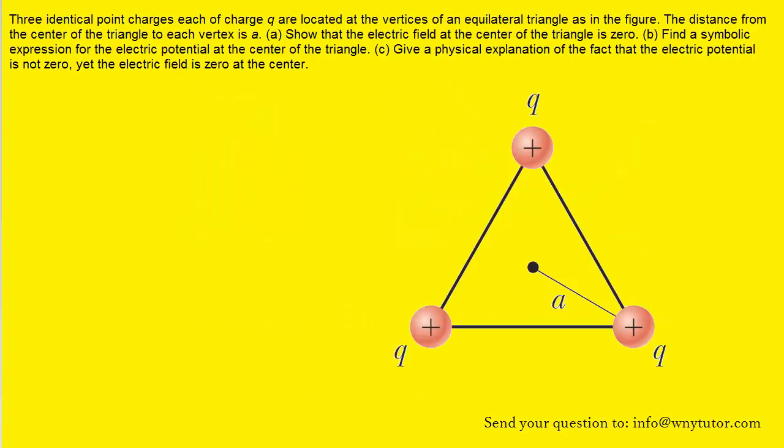If you haven't done so yet, make sure that you pause the video and give the question a try on your own first before listening on. In part A, in order to show that the electric field at the center of this triangle is zero, what we want to do is draw the electric field vectors that are produced by these three positive charges.